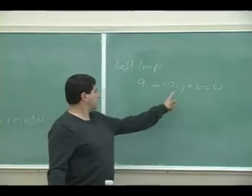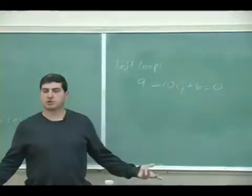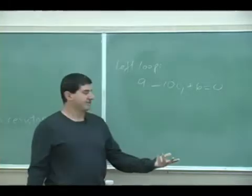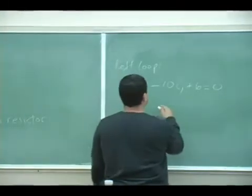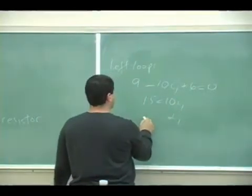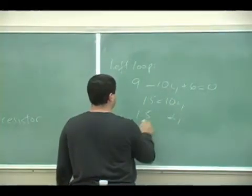Well, actually, if you look at this, we don't even need to know loop two to get I1. That one directly gives us I1. 15 is equal to 10I1, I1 is equal to 1.5 amps.